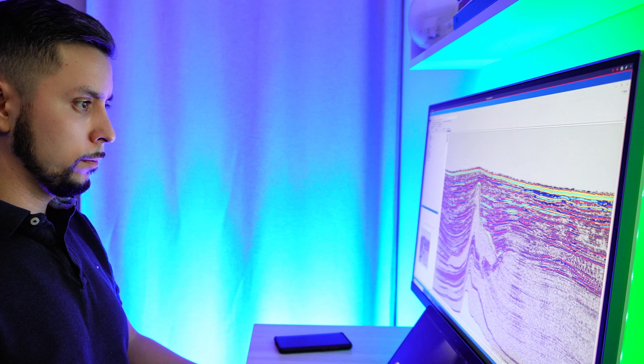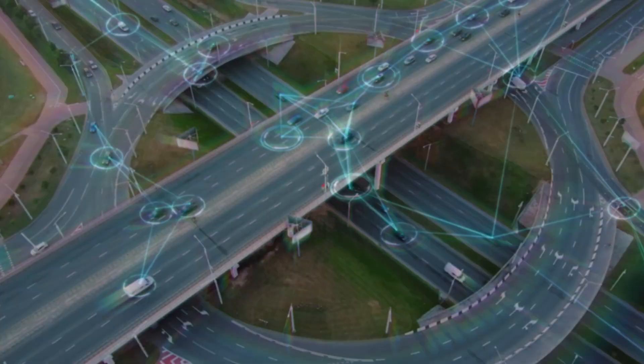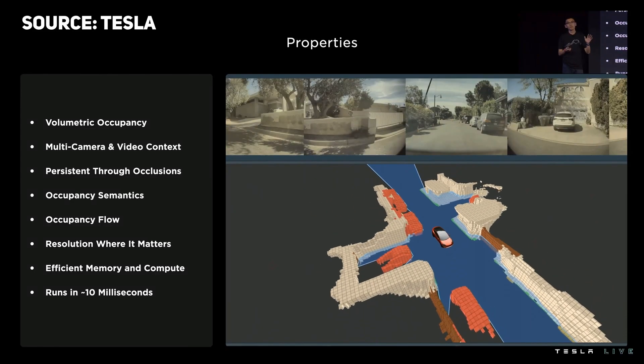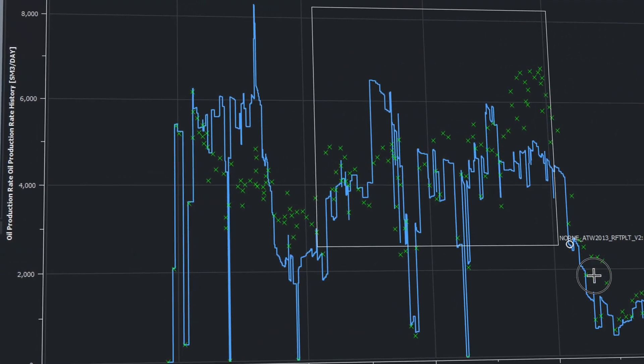Subsurface interpretation in reservoir exploration is a lot like autonomous driving. Both involve processing and integrating data from multiple sources to create a comprehensive understanding of the environment. In subsurface interpretation we work with seismic, well logs, and production data, while in autonomous driving we use sensors like cameras, lidars, and GPS.